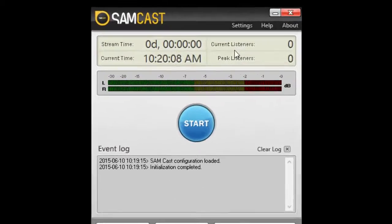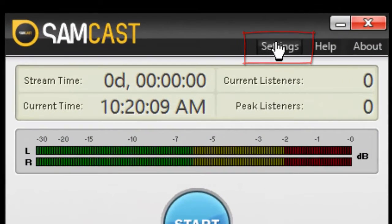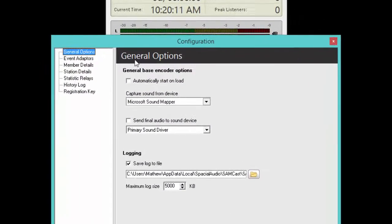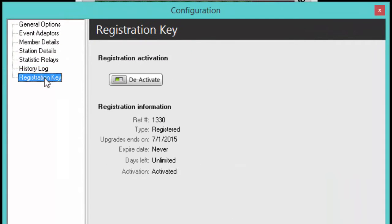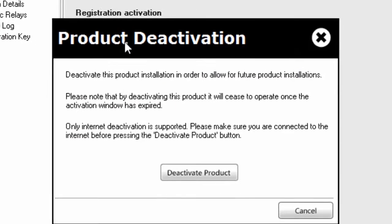In SAM Cast this is slightly different and you would select Settings instead of Config. Once deactivated, the software will close and the activation becomes available for use on another computer.